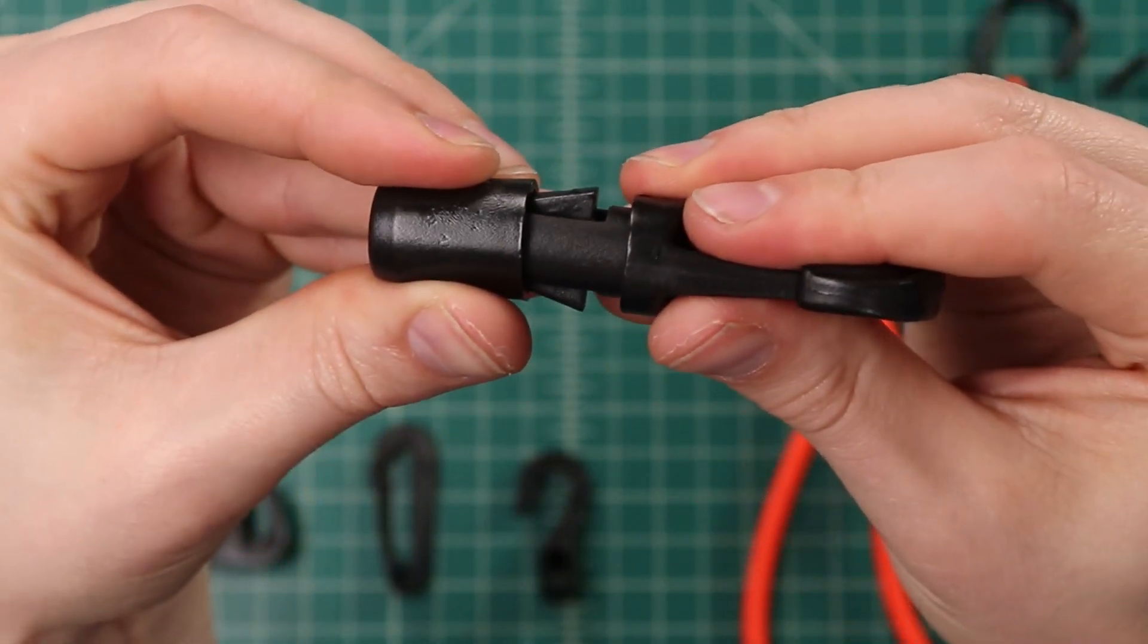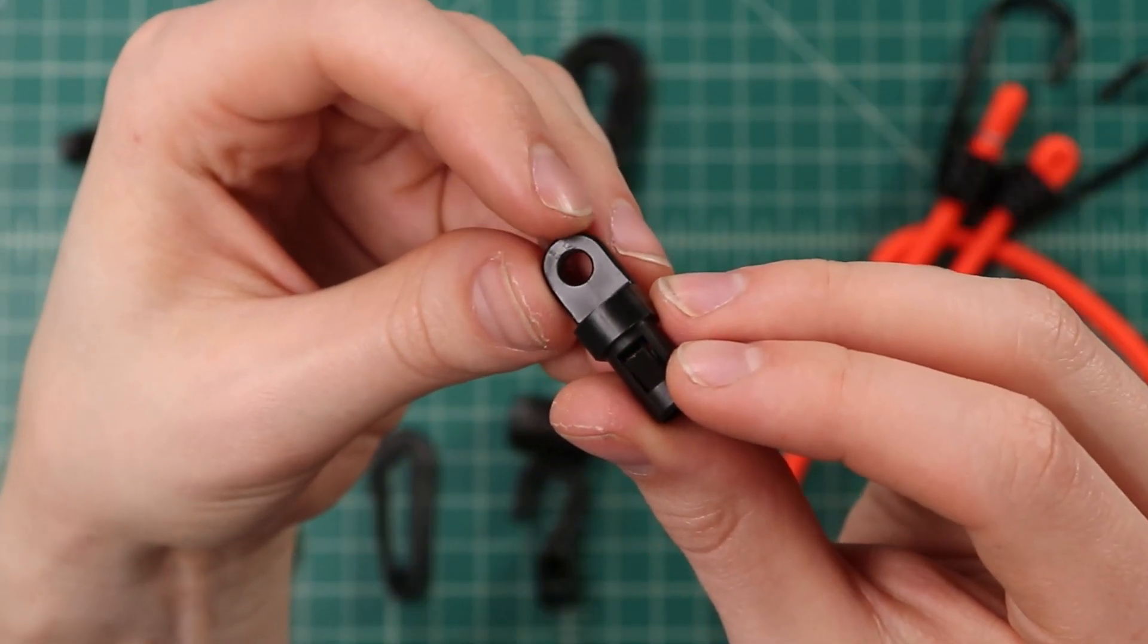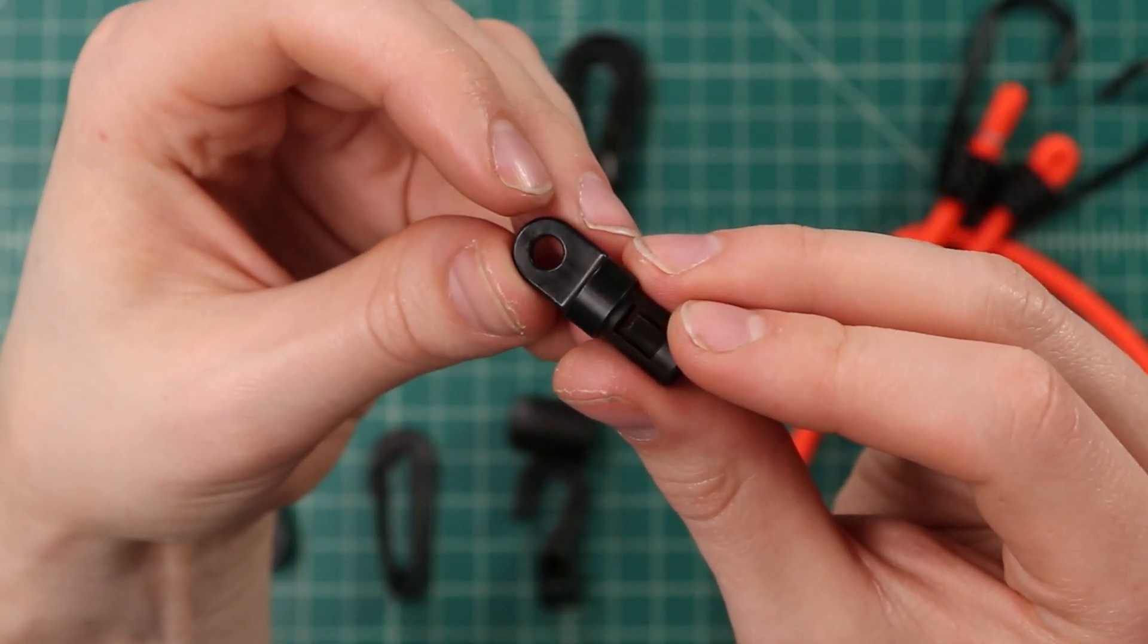There's a few different hook styles. There's a closed hook, an open hook, one that attaches to webbing, and also this one where you can screw it on to a hard surface, like a kayak for instance.